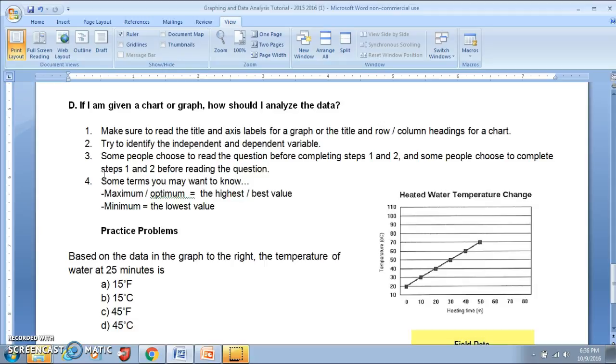So part D of the tutorial asks us if I'm given a chart or graph, how should I analyze the data? I have a couple suggestions for that. The first one is to make sure that you read the title and your axis labels for a graph. Or, if it's a chart, read the title and row or column headings. One other thing you may want to look at is if the graph specifically has a key or legend.